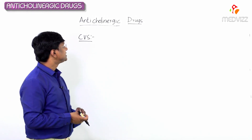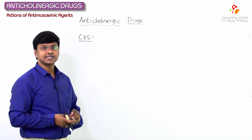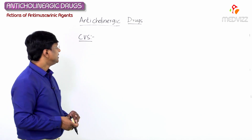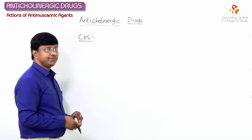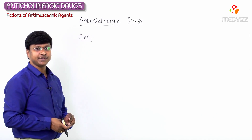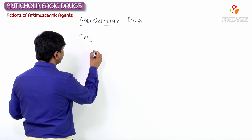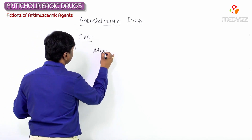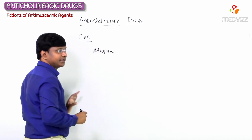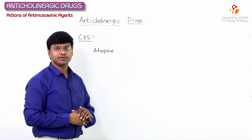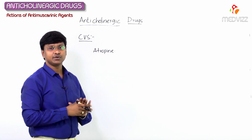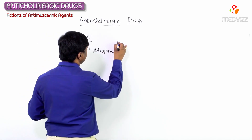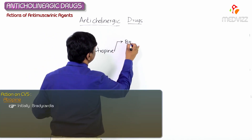Let me discuss the effect of anticholinergic drugs on the cardiovascular system. If you take the effect of these drugs on the cardiovascular system, first take atropine. Remember, atropine initially will cause bradycardia — atropine causes bradycardia initially.